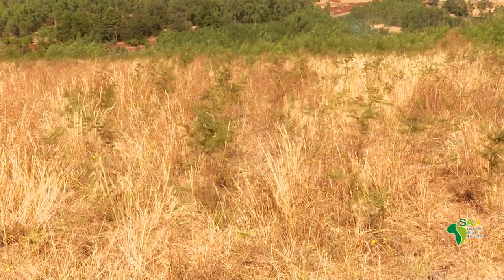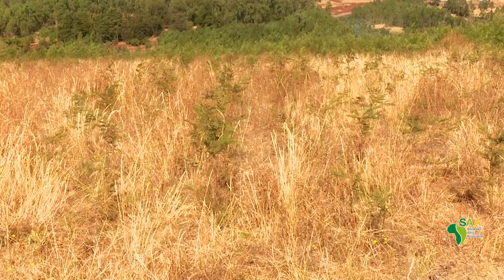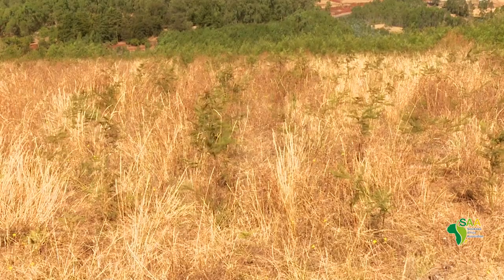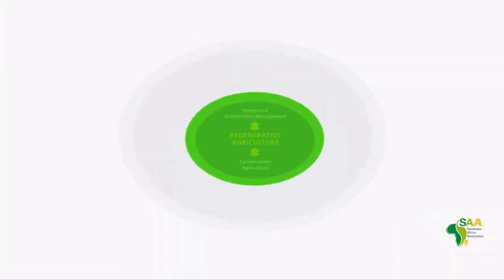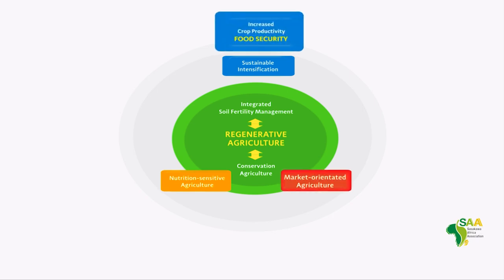The Sasako Africa Association (SA) is promoting sustainable and regenerative agriculture as a way out of the country's intricate problems of low agricultural productivity and environmental degradation. SA has prioritized regenerative agriculture as one of its key strategic pillars.